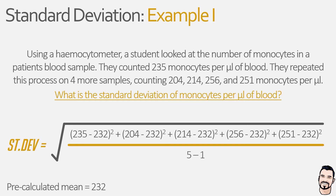So x minus x-bar becomes our data values minus the mean data value, i.e. our deviation, repeated for each data value, and n becomes the number five as this is the number of data values we observed. To make everything easier, we can start simplifying this equation by calculating everything in the brackets on the top line of the equation.